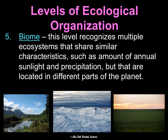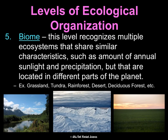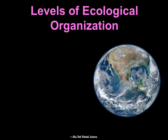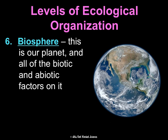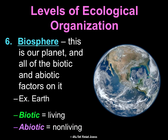A biome is the next biggest level, recognizing multiple ecosystems that share similar characteristics — similar organisms, sunlight, and precipitation — but are in different parts of the planet. There are grasslands, tundras, rainforests, deserts, and more. For example, a desert biome exists in North America, Africa, and South America, and all those ecosystems share similar organisms and characteristics — that's what makes it a biome. The broadest ecological organization is the biosphere — our planet — encompassing all biotic (living) and abiotic (non-living) factors. Our biosphere is Earth.